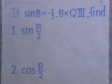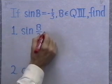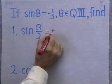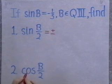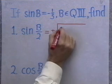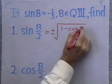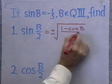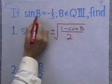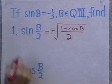We want to memorize these formulas. In this case, I have sine of b over 2. I know I'm going to want plus or minus the square root of the quantity 1 minus cosine b, all over 2. So all I need here is cosine b. I have sine b equals negative one-third, so I need cosine b.